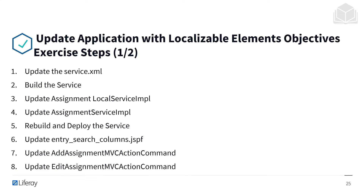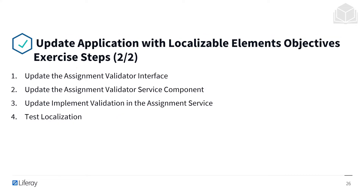The steps we're going to take: we'll begin by updating the service.xml, then rebuild the service. We'll update assignment local service impl and assignment service impl, then rebuild and deploy the service. We'll update the entry search columns JSPF file, the add assignment MVC action command, the edit assignment MVC action command, the assignment validator interface, and the assignment validator service component. Finally, we'll test the localization in the UI.